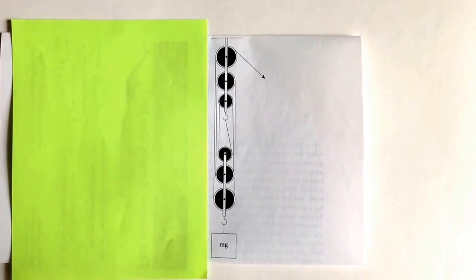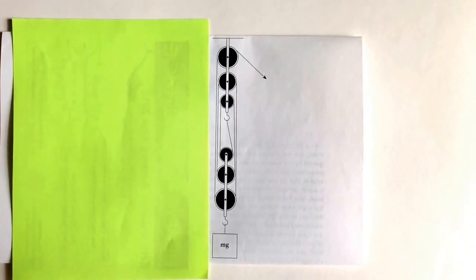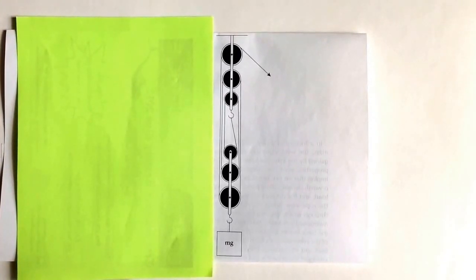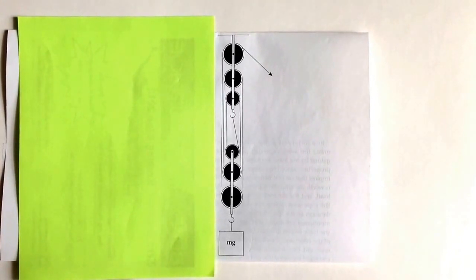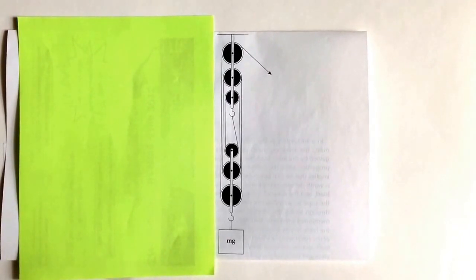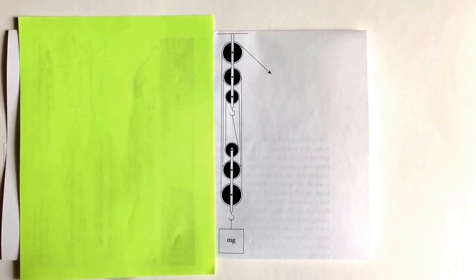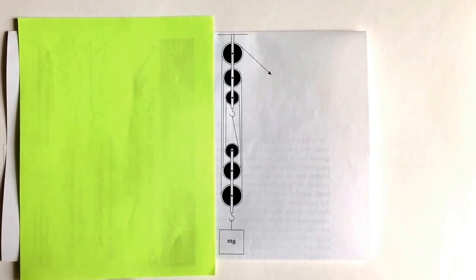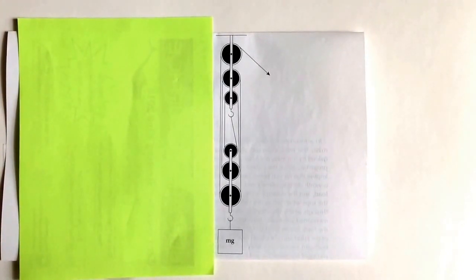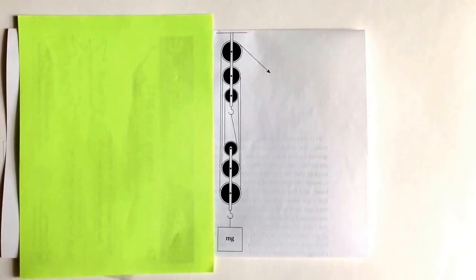Now there is a load attached to the system of pulleys. If the load should go up by say 4 meters, then looking at the picture, there are 6 strands of rope attached to the pulleys. So as the load is lifted, are you able to visualize that each of the strands of rope, and there are 6 of them, each one of them would have to move 4 meters up.